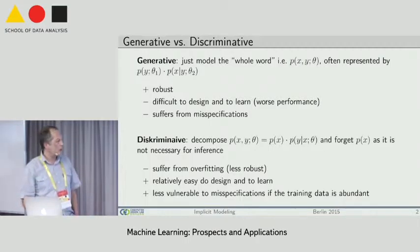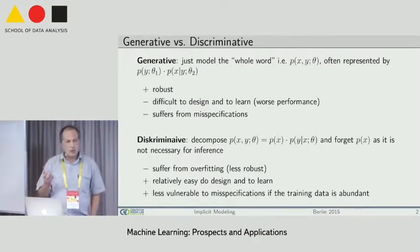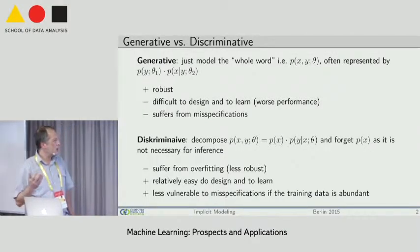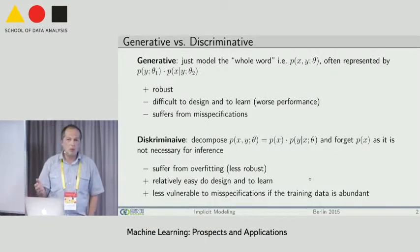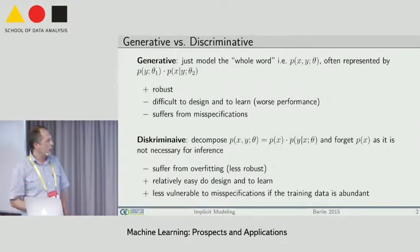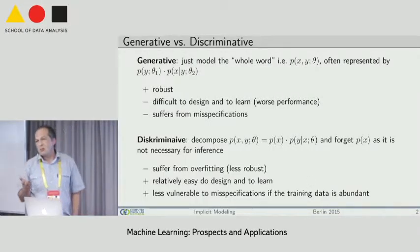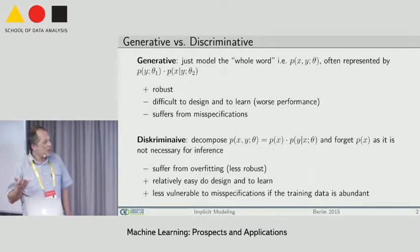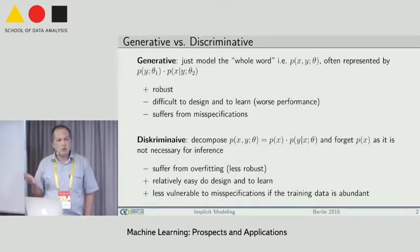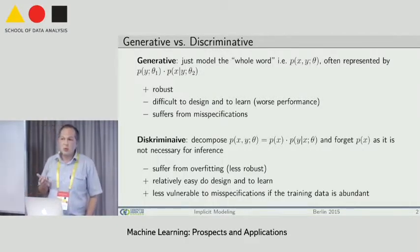It's known from the literature the drawbacks and advantages of these two approaches. For instance, discriminative models are more prone to overfitting — you need more data to reliably train them. On the other hand, discriminative models are easier to design. You can put any feature you like into your discriminative model and just build some probabilistic model on top of it.